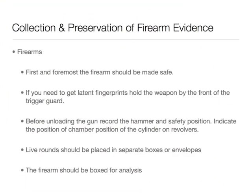Finally, we need to talk about the collection and preservation of firearm evidence. First and foremost, the firearm needs to be made safe. If you need to fingerprint it, carry the weapon by the trigger guard. Before unloading the gun, make sure to record the hammer and safety positions and indicate the position of the chamber and position of the cylinders on revolvers. Live rounds should be placed in separate boxes, and the firearm should be boxed for analysis.